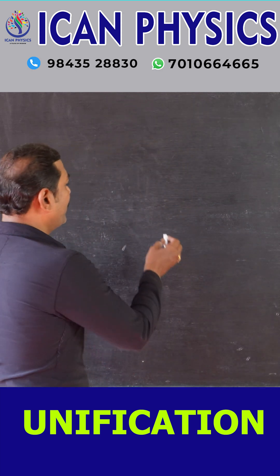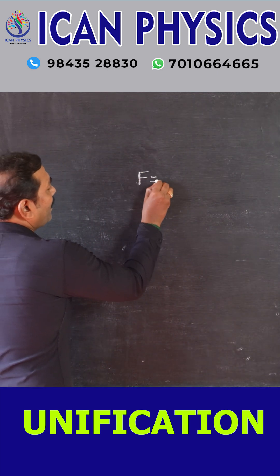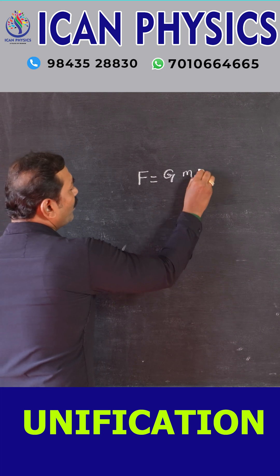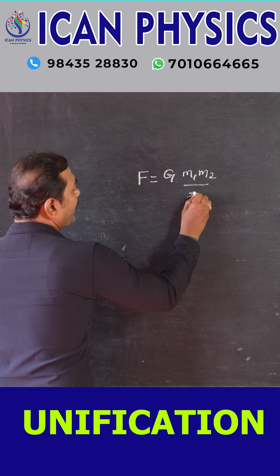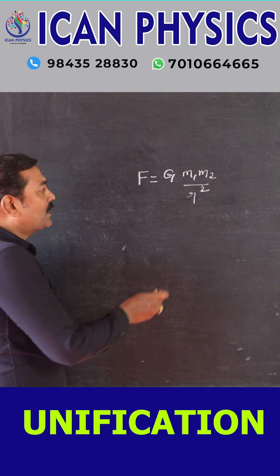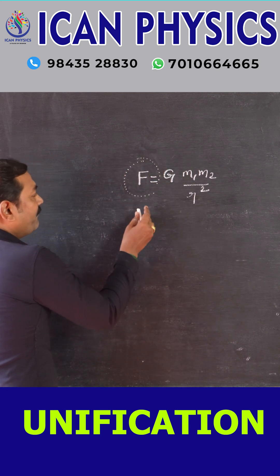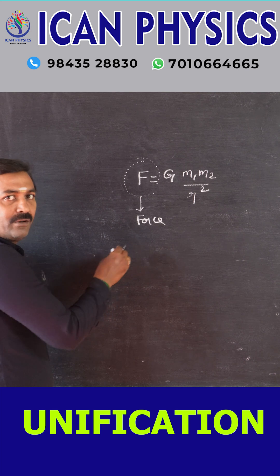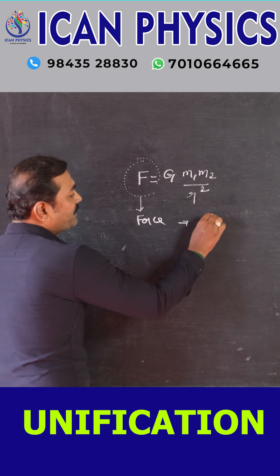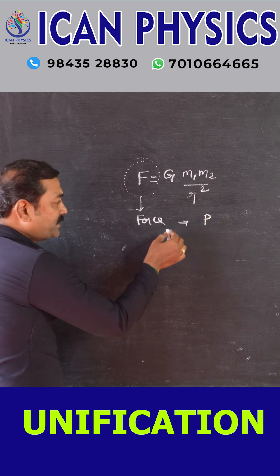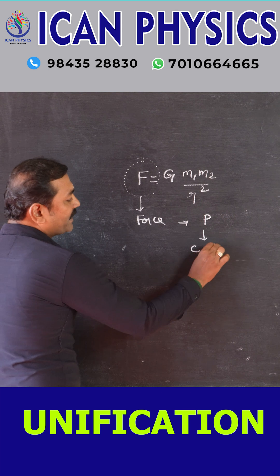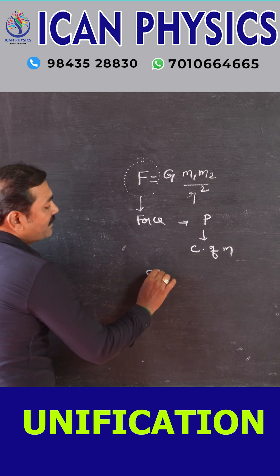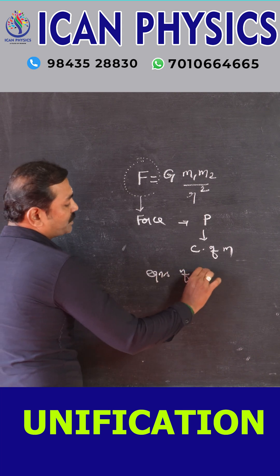Single law. Suppose we know the universal law of gravitation: F equals G times M1 times M2 divided by R squared. By using this simple law, we can explain what is force. By using force, we can explain momentum. By using momentum, we can go for conservation of momentum. By using that, we can explain equations of motion.